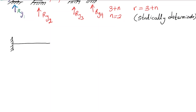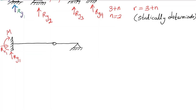Let's say we have a beam connected to a fixed support at one end. Then we have a hinge, and it is connected to a pin support. For a fixed support there are three reaction forces: Ry1, Rx1, and a moment M. The pin support has two reactions: Ry2 and Rx2.